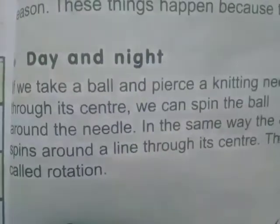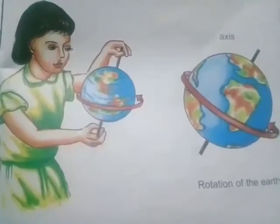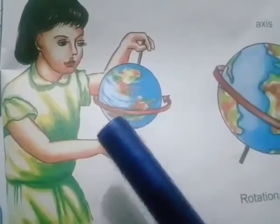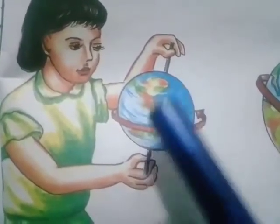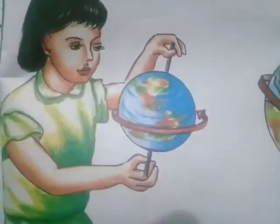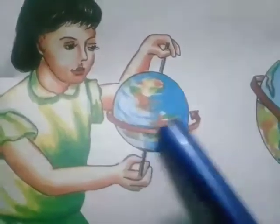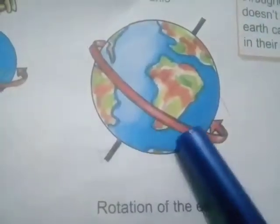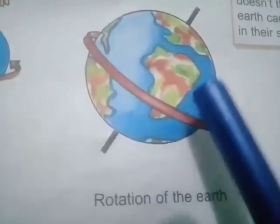The next topic is day and night. Now we see how days and night are formed with the help of an example. Look in this picture: if we take a ball and put a knitting needle through its center, we can spin the ball around the needle. In the same way, the earth spins around a line through its center. This is called rotation.